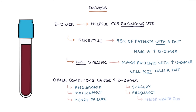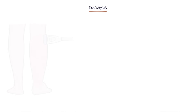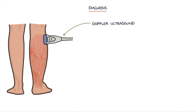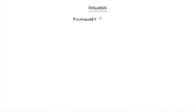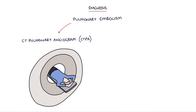It's worth noting it's never worth doing a D-dimer when a patient is pregnant. A Doppler ultrasound scan of the leg is required to diagnose a deep vein thrombosis. The NICE guidelines recommend repeating negative ultrasound scans after 6–8 days if the patient has a positive D-dimer and the Wells score suggests that a DVT is likely, because the first ultrasound scan may have been falsely negative. A pulmonary embolism can be diagnosed using a CT pulmonary angiogram (CTPA) or a ventilation-perfusion scan (VQ scan).